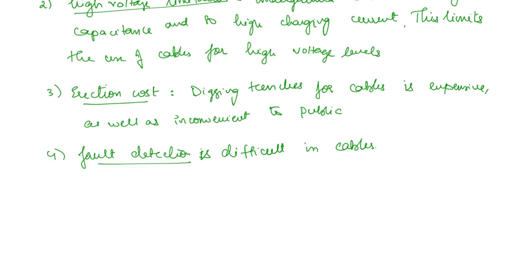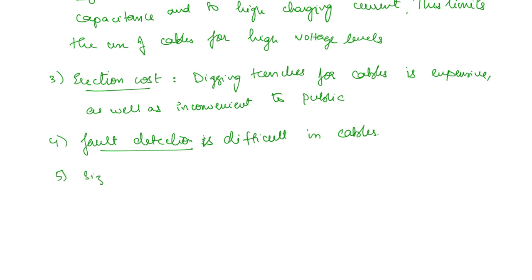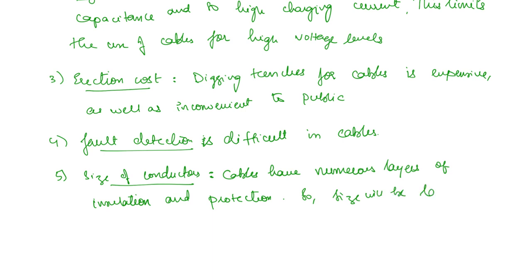Next is the size of conductor. Cables have various layers for protection and insulation. The resultant overall size of the conductor will be huge. Cables have numerous layers of insulation and protection, so size will be larger compared to overhead lines.